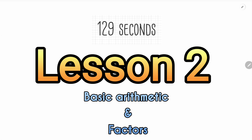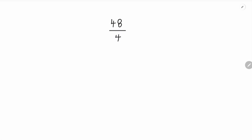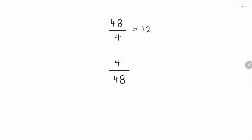Lesson number two is understanding the basic arithmetic and factors around fractions. If we take the fraction 48 over 4, how can you simplify what you see here? We do a division. What do we get when we divide 48 by 4? We could ask how many 4s go into 48 — that's going to be 12. If it wasn't a straightforward division and we needed to keep that fraction structure, we'd be asked to simplify, and we can use factors to help us.